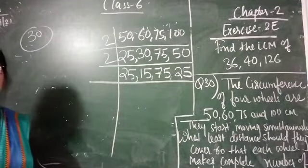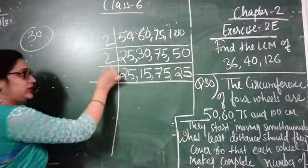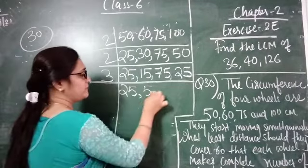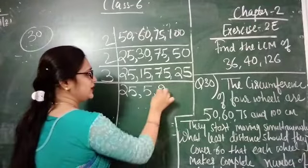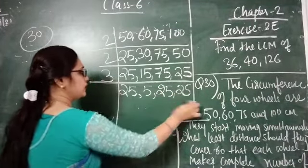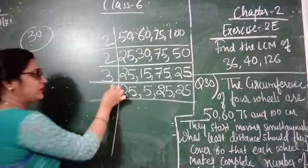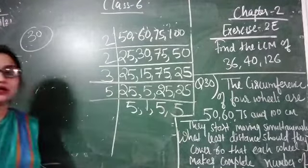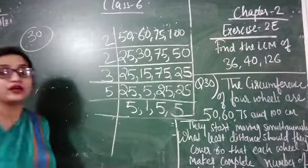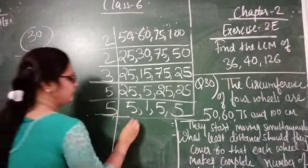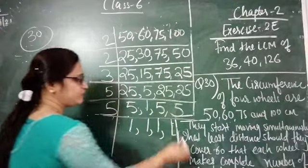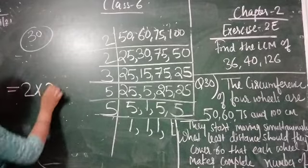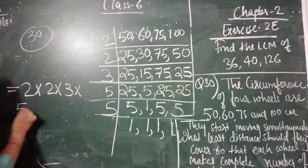Now not a single remaining number can be divided by 2, so we take 3. 25 cannot be divided by 3, write 25 as it is. 15 ÷ 3 = 5. 75 ÷ 3 = 25. 25 as it is. Next prime number is 5. Dividing all by 5: 25 ÷ 5 = 5, 5 ÷ 5 = 1, 25 ÷ 5 = 5, 25 ÷ 5 = 5. Again by 5: 5 ÷ 5 = 1, 1 as it is, 5 ÷ 5 = 1, 5 ÷ 5 = 1. The prime numbers we get are 2 × 2 × 3 × 5 × 5.